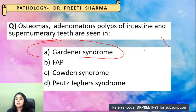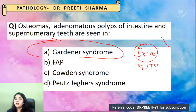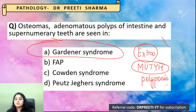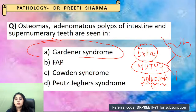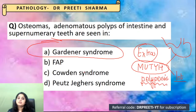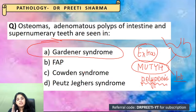New addition to the FAP table: MUTYH polyposis (MUTYH gene mutation). This was in Harrison and has now been added to Robbins. MUTYH polyposis causes adenomatous polyps of both the stomach and intestine — an important last-line addition to know.